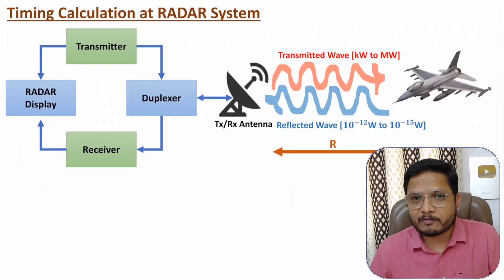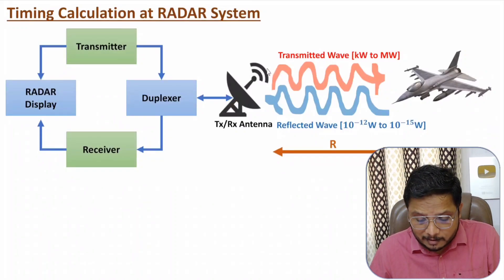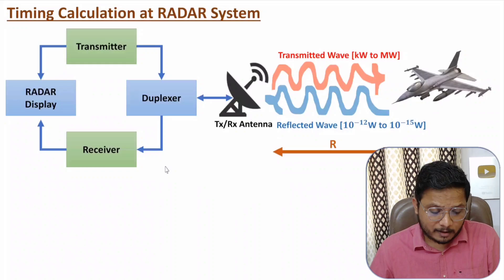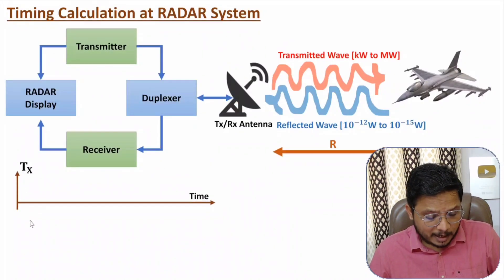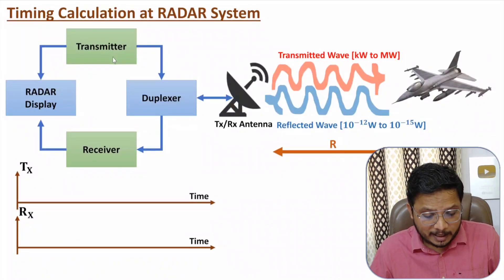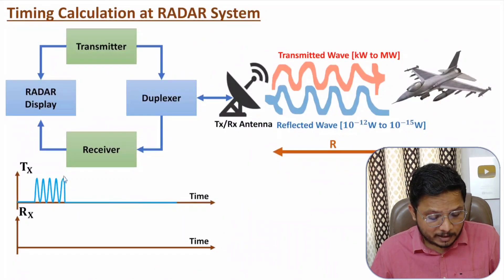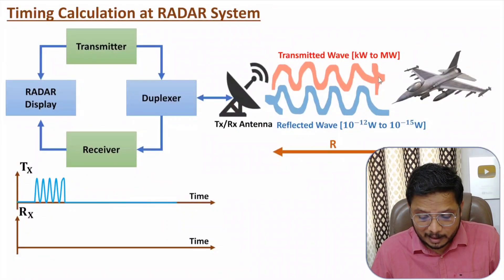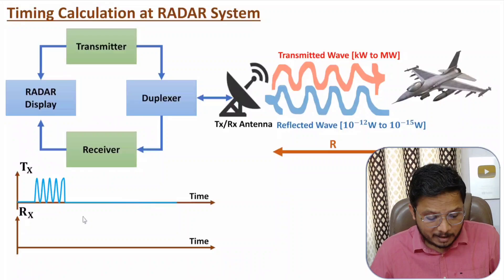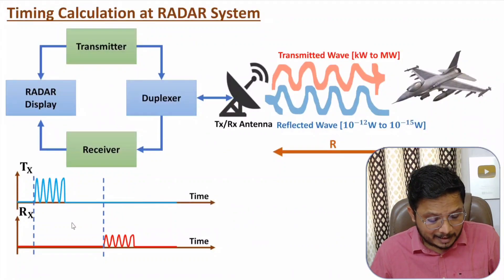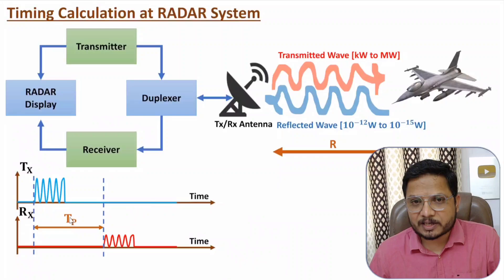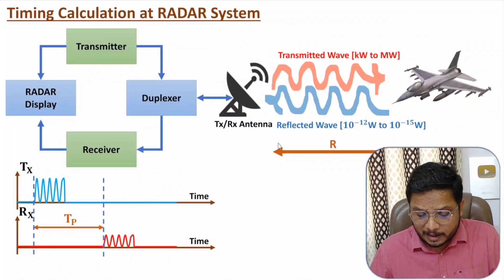To identify range, you need to understand transmission and reception with respect to time. Here I'll show you waveforms of the transmitter and receiver. The transmitter transmits a high power signal — during this pulse width we are transmitting a high frequency signal into space. After some delay, the reflected echo signal comes back, and the receiver receives that reflected echo signal.